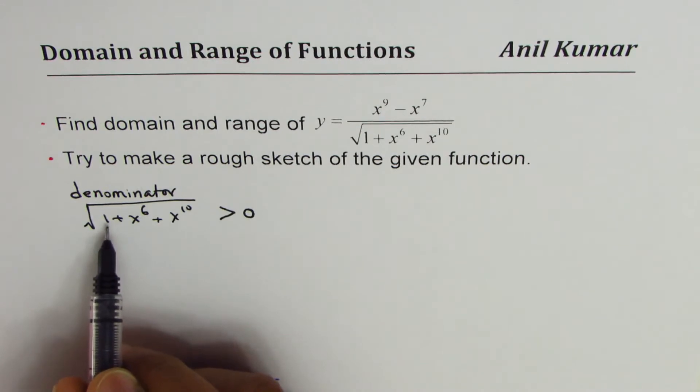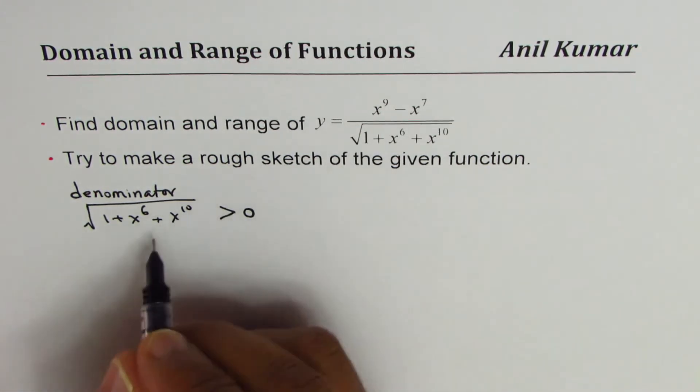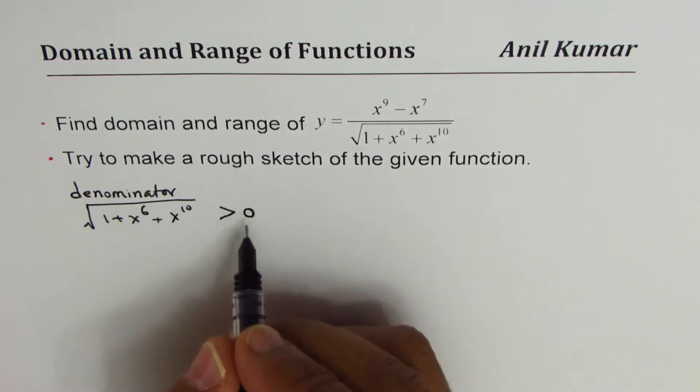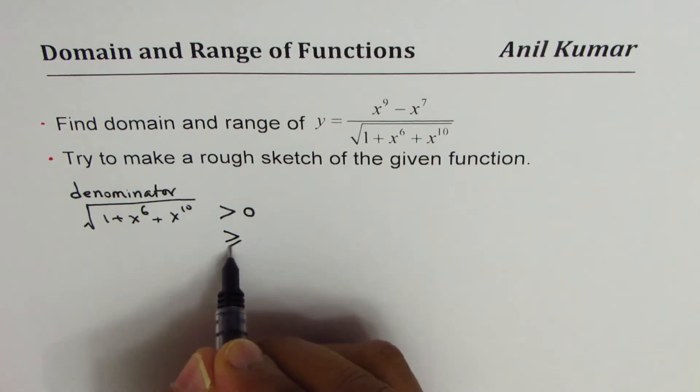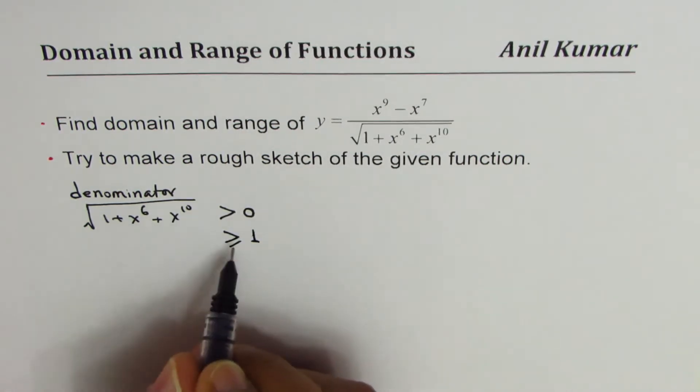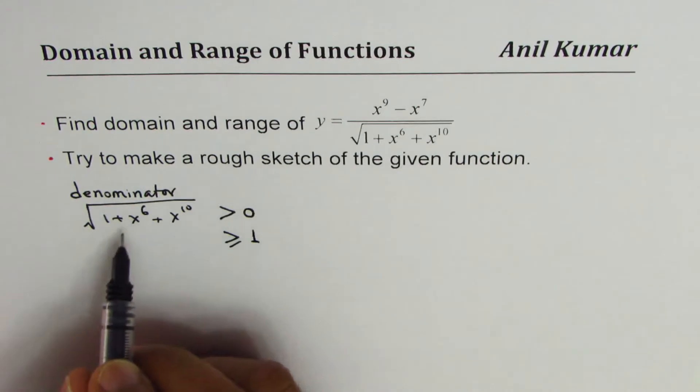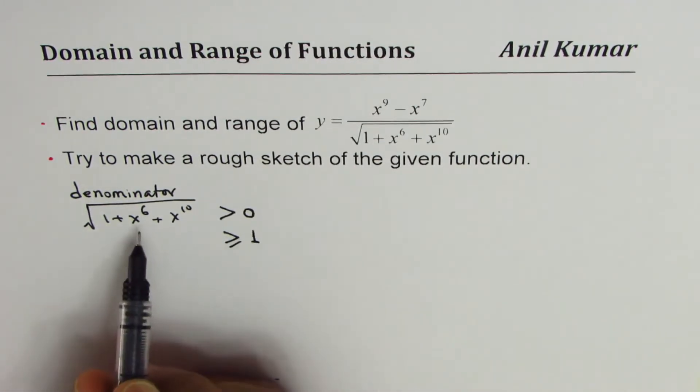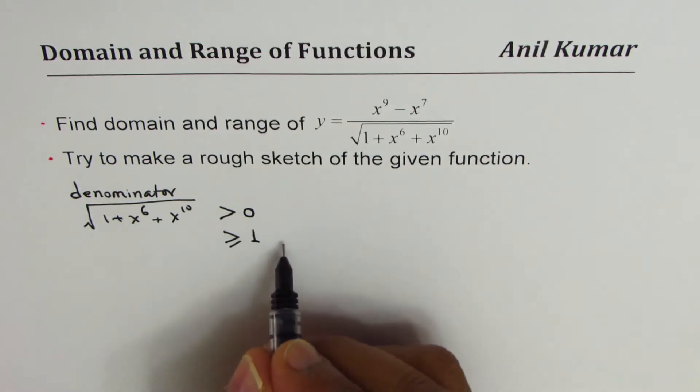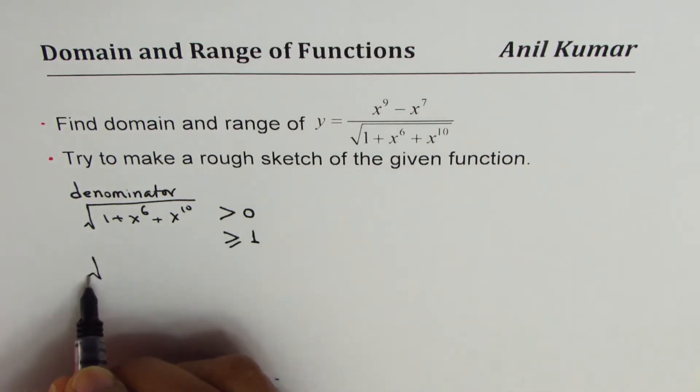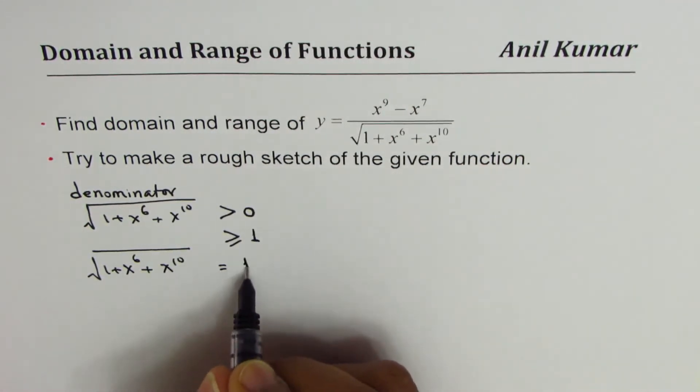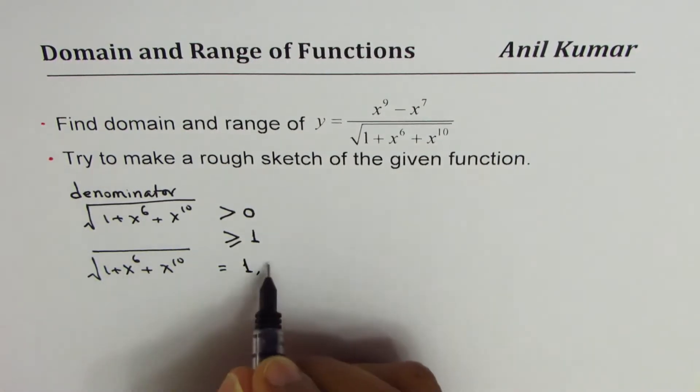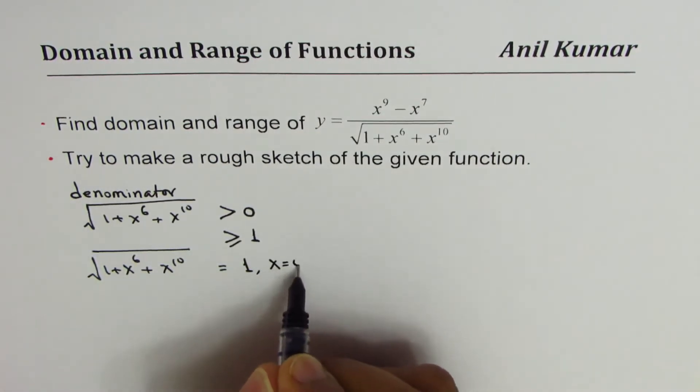Minimum being 1, do you see that? In fact, this value will always be greater than or equal to 1, and that will be the case when x is 0. So square root of 1 plus x to the power of 6 plus x to the power of 10 equals 1 when x equals 0.